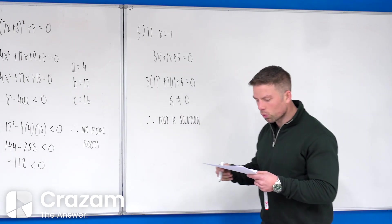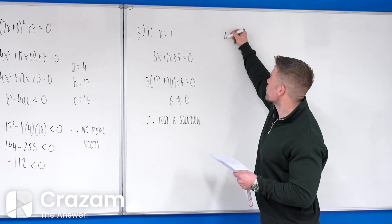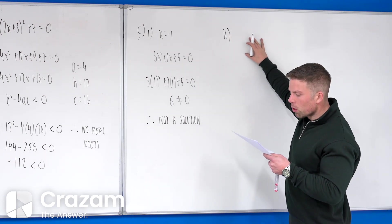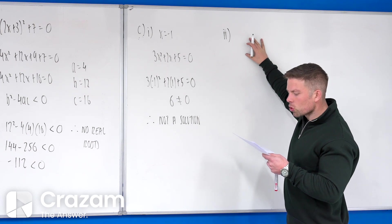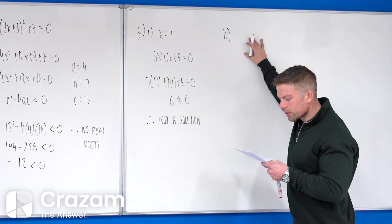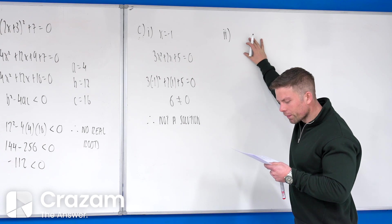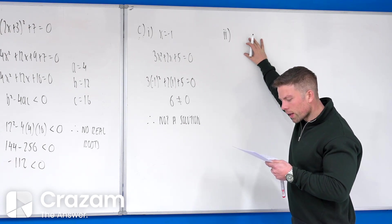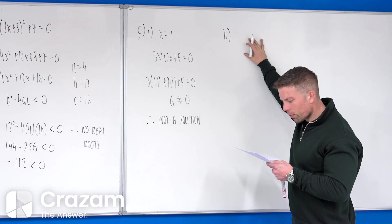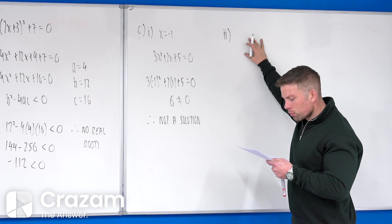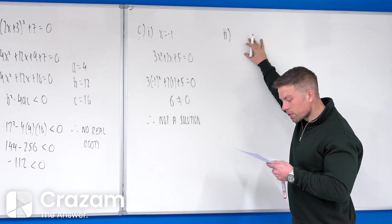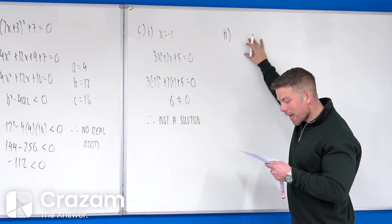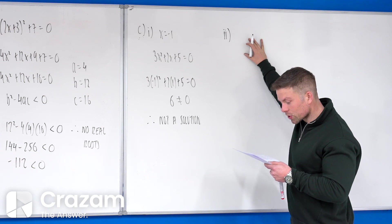therefore, it is not a solution. So that's C part 1. And then C part 2 says find the remainder when 3x squared plus 2x plus 5 is divided by x plus 1. That is, find the value of C when 3x squared plus 2x plus 5 is written in the form 3x squared plus 2x plus 5 equals to x plus 1 times ax plus b plus C.